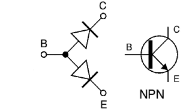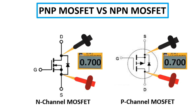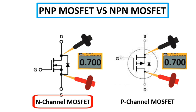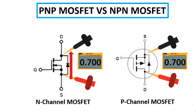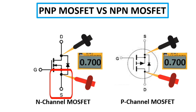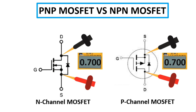For MOSFETs there is just one diode — between source and drain — whereas a transistor contains two diodes: one between collector and base, and one between base and emitter. For N-channel MOSFET, the direction of the diode is from source to drain. For P-channel, the direction is from drain to source. To test an N-channel MOSFET, put the red probe in the source and the black probe in the drain to get a reading; swapping the probes gives no reading.